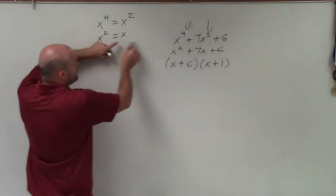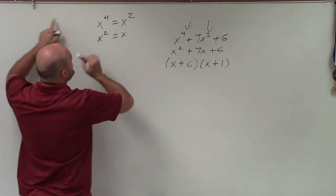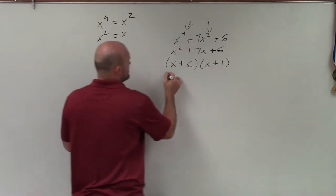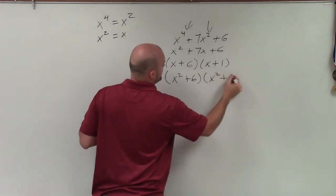So now, remember, we said x squared equaled x, right? Well, now I have x in this equation. Let's go back to our original equation and say x is going to equal x squared. So now I'll write this as x squared plus 6 times x squared plus 1.